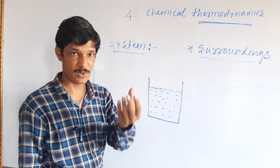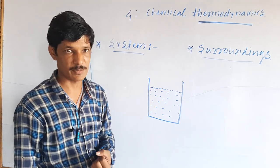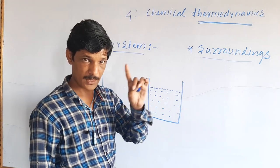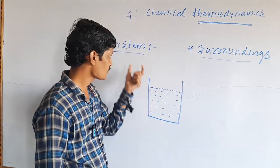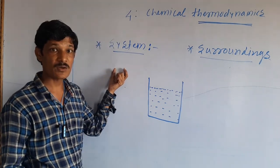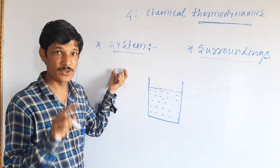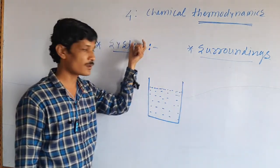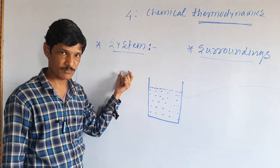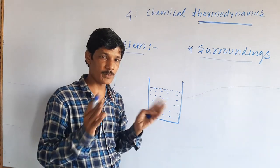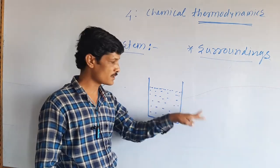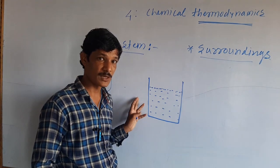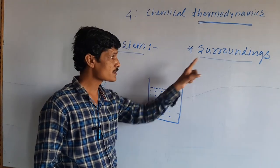So we have three basic concepts: system, surroundings, and boundary. The part of the universe which is under thermodynamic investigation is called the system. And all other parts outside the system are called the surroundings.